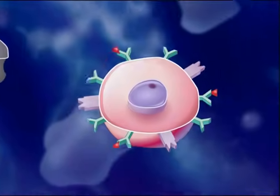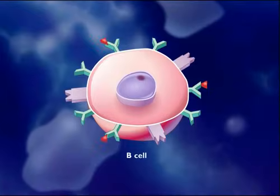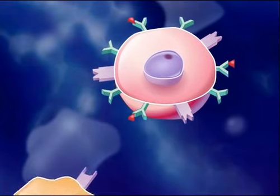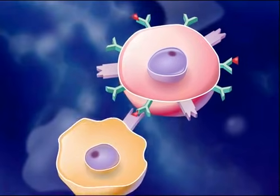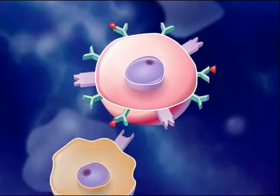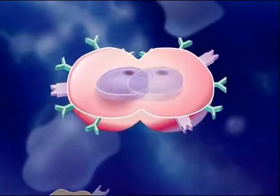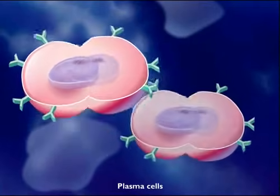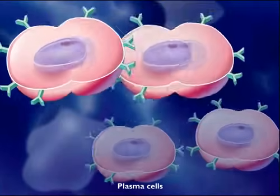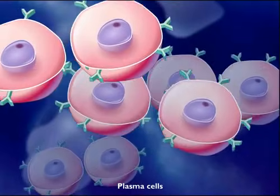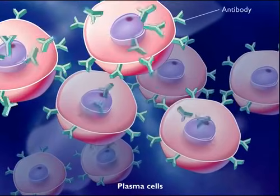B-cells also come in millions of different types, each able to recognize a particular antigen. When B-cells become activated by T-helper cells, they differentiate into plasma cells. These plasma cells become antibody-producing factories,